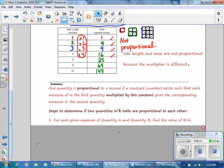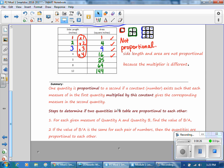The steps to determine if two quantities in a table are proportional are as follows. Number one, for each given measure of quantity A and quantity B, find the value of B divided by A. So you can figure that out by division. Second, if the value of B divided by A is the same for each pair of numbers, then the quantities are proportional to each other.